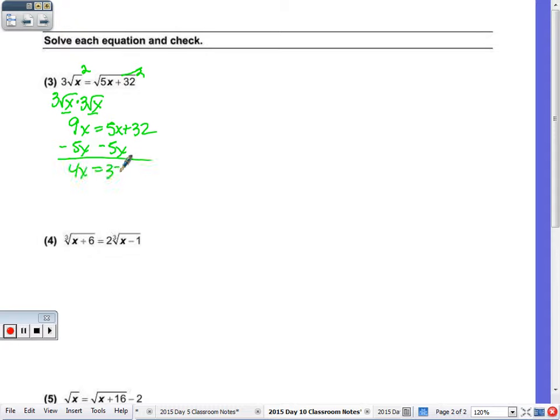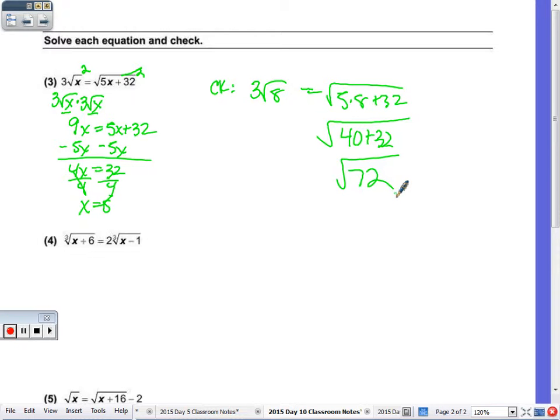X equals 8. So when I check that, is 3 radical 8 equal to square root of 5 times 8 plus 32? This is 40 plus 32, 72. You can simplify that using the largest perfect square. But can you make radical 72 equal to 3 radical 8? 9 times 8. So if I break this down, 9 times 8, this is 3 radical 8. I realize 8 can be broken down, but if you can somehow rewrite one side to match what's written on the left side, then it checks. 3 radical 8 on the right, we have 3 radical 8 on the left.